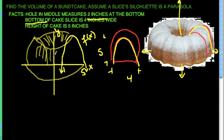So when we do rotate this parabola around the y-axis it would look something like this. It's supposed to be a bundt cake. We rotate this parabola around the y-axis. This hole in the middle of the bundt cake measures two inches. So if it's two inches from here to here, then this distance must be one inch from there to there. So that's x equals one.